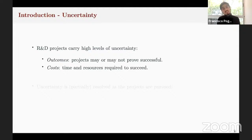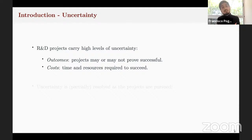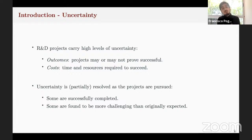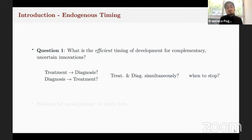These research and development projects carry a high level of uncertainty in terms of both the outcomes — the projects may or may not prove to be successful — but also in terms of the cost. It's not known exactly how much time and resources will be required to succeed. However, this uncertainty is at least partially resolved as the projects are pursued. For example, some projects are successfully completed but some other projects are found to be more challenging than originally expected. With this in mind, the first question in this paper is: what is the efficient timing of development of complementary uncertain innovations?